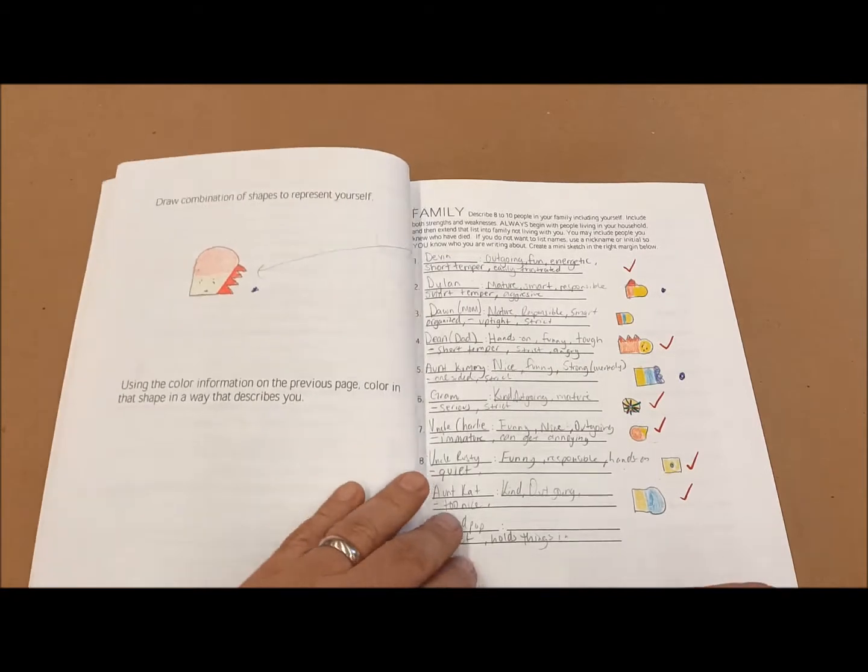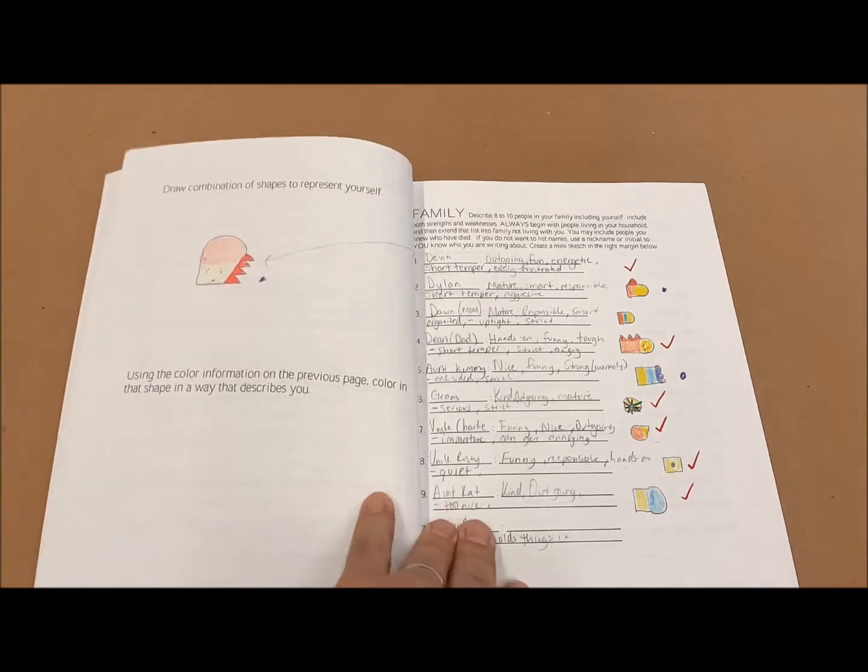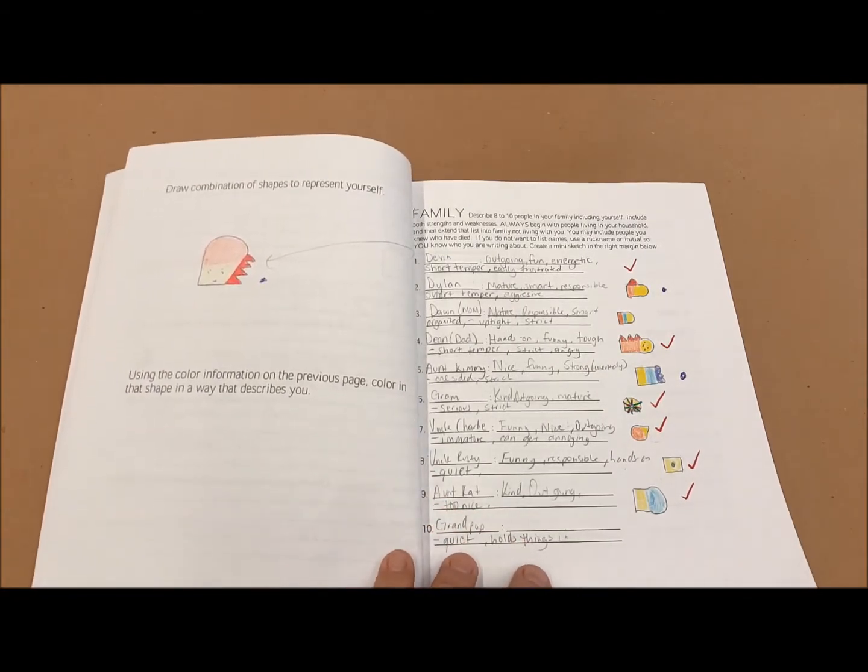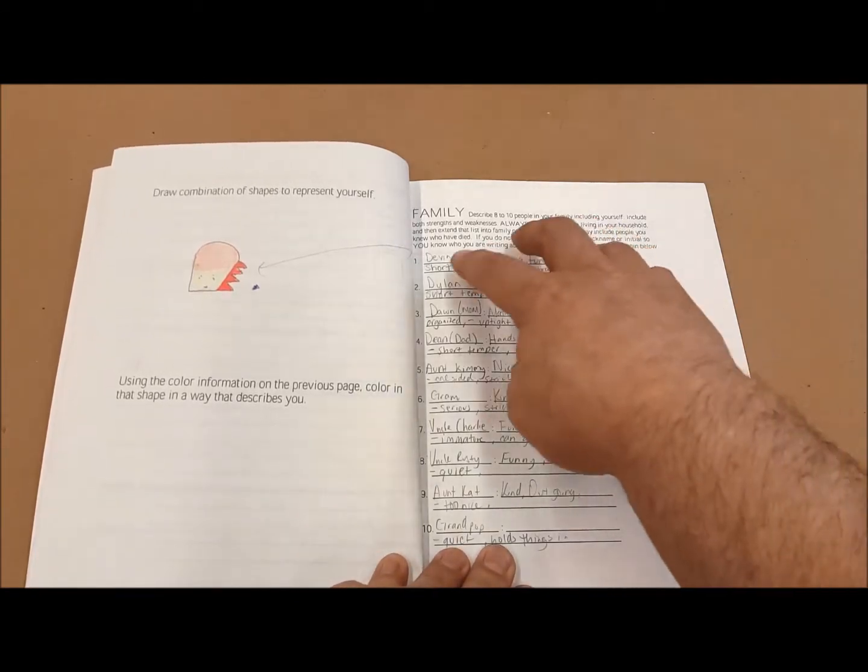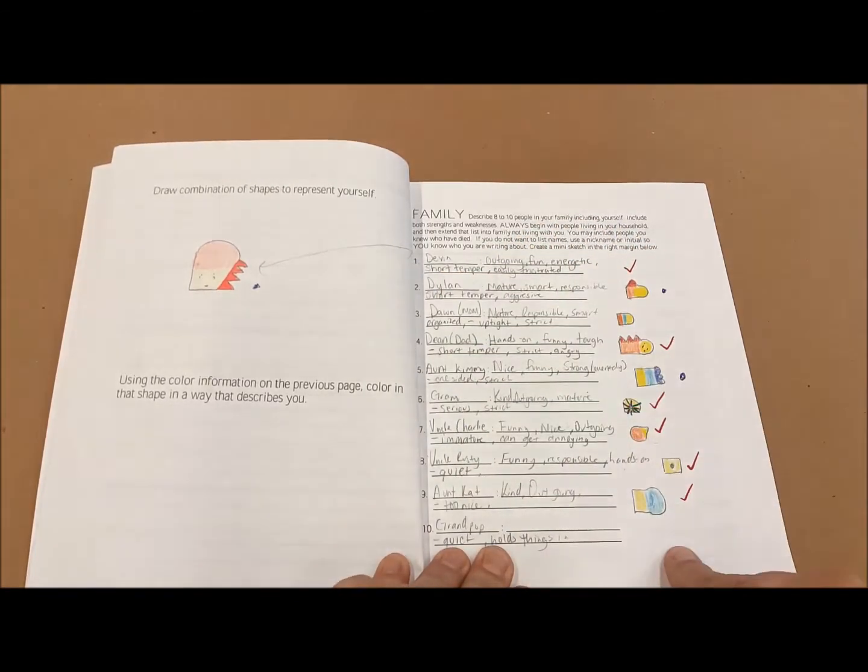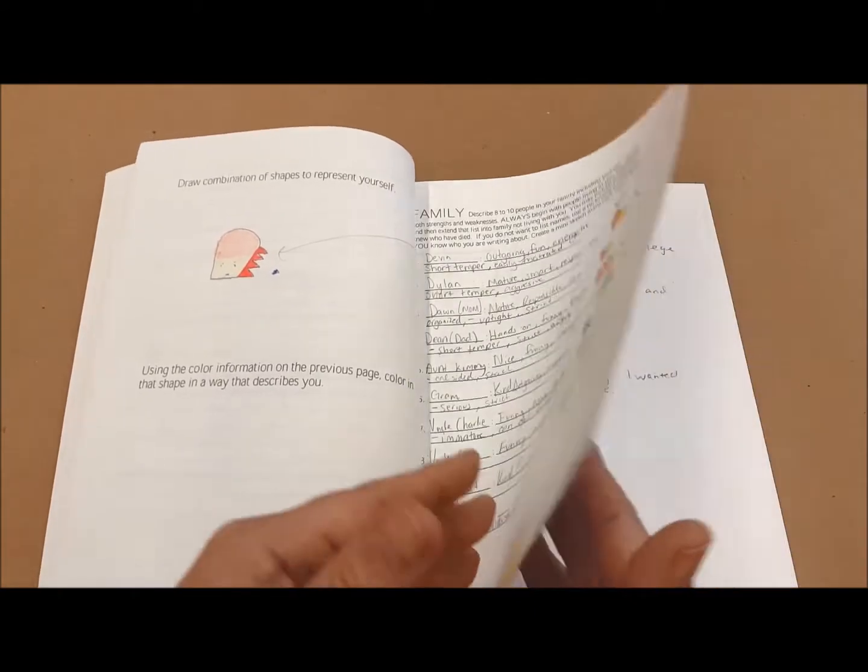Here they're sketching for a mobile sculpture, which we use in our class as a project. Each shape represents a different member of their family. They can do their writing here, do their little sketching here before they actually go on to create the projects.